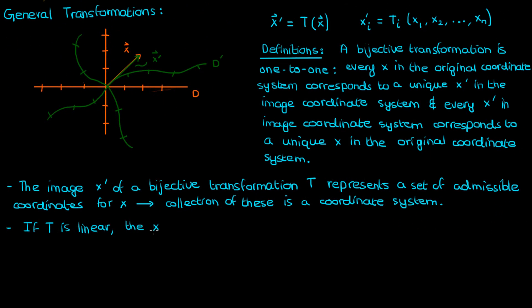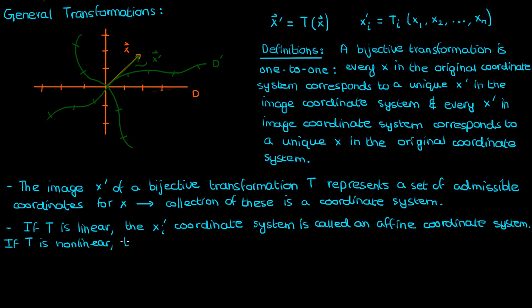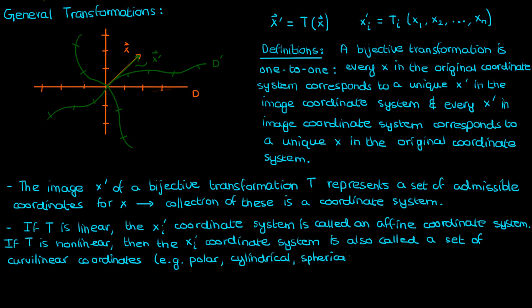Now if T is linear, the X prime I coordinate system is called an affine coordinate system. In addition, if T is a nonlinear transformation, then the X prime I coordinate system is also called a set of curvilinear coordinates. Examples would include polar coordinates, cylindrical coordinates, and spherical coordinates.